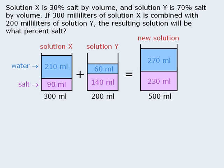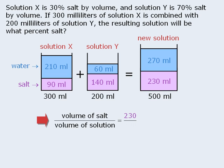Now, if we express the salt concentration of the new solution as a fraction, it will equal the volume of salt over the total volume of the new solution. So in the new solution, there is 230 mL of salt and there is 500 mL of solution in total. When we convert this fraction to a percent, we get 46%. So the new solution is 46% salt by volume.